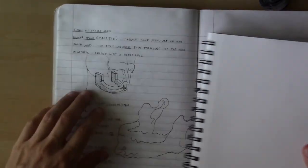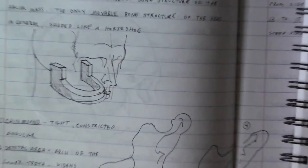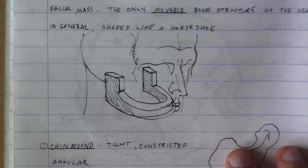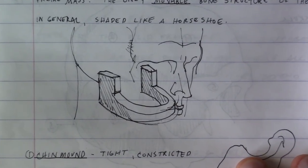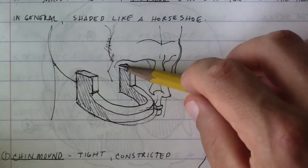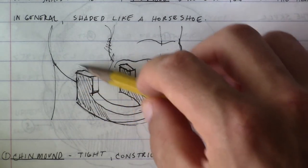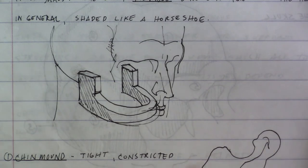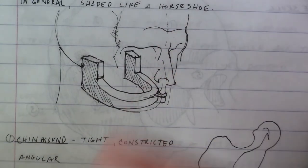So, in general, it's shaped like, let me zoom in here. In general, it's shaped like a horseshoe, as we can envision. Here we have the lower jaw, horseshoe shaped, attached at the jaw hinge to the skull.